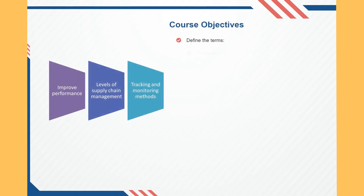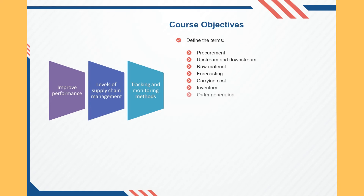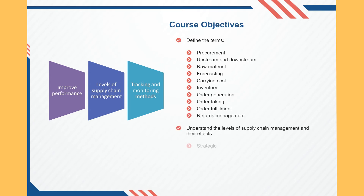Define the terms: Procurement, Upstream and downstream, Raw material, Forecasting, Carrying cost, Inventory, Order generation, Order taking, Order fulfillment, Returns management. Understand the levels of supply chain management and their effects: Strategic, Tactical, and Operational.